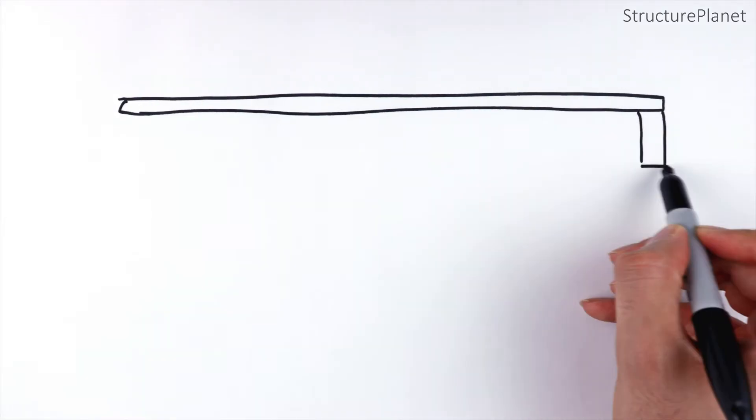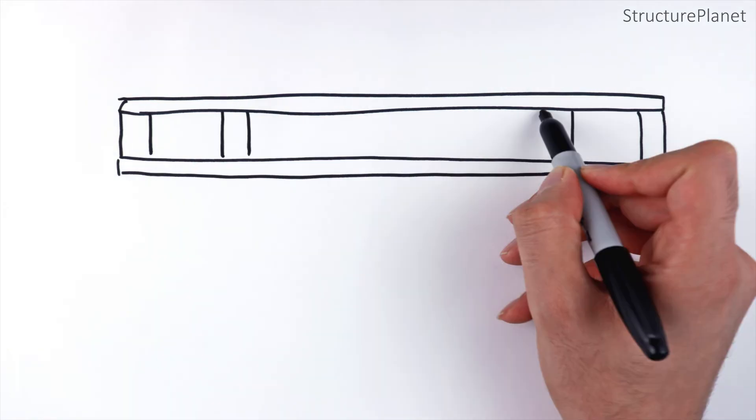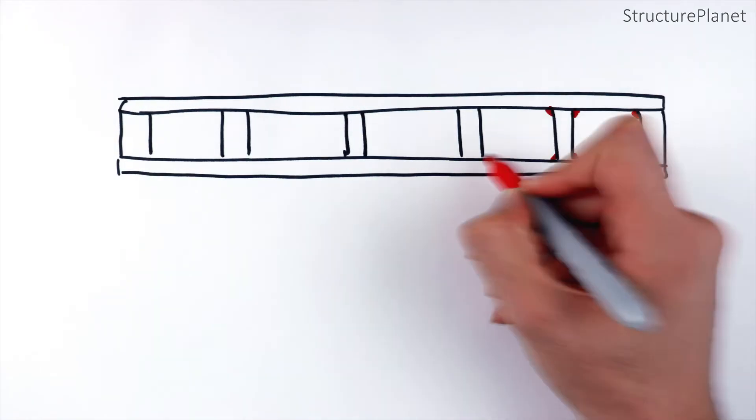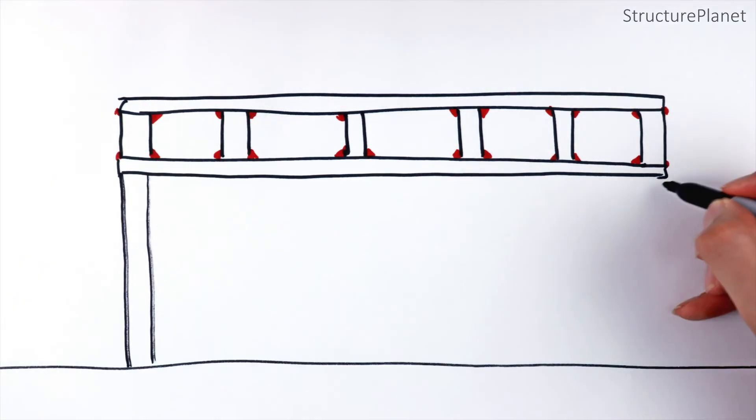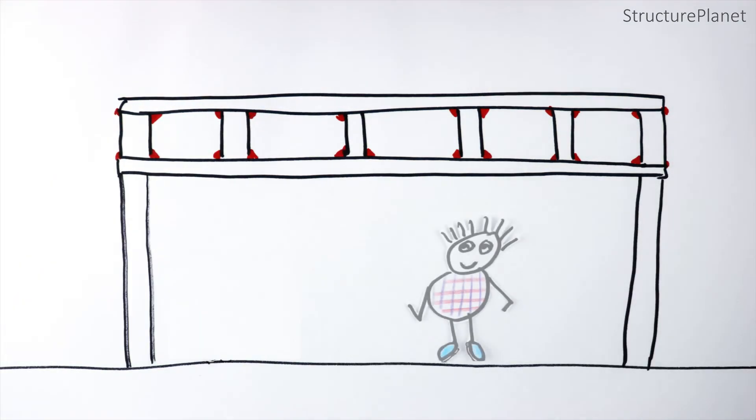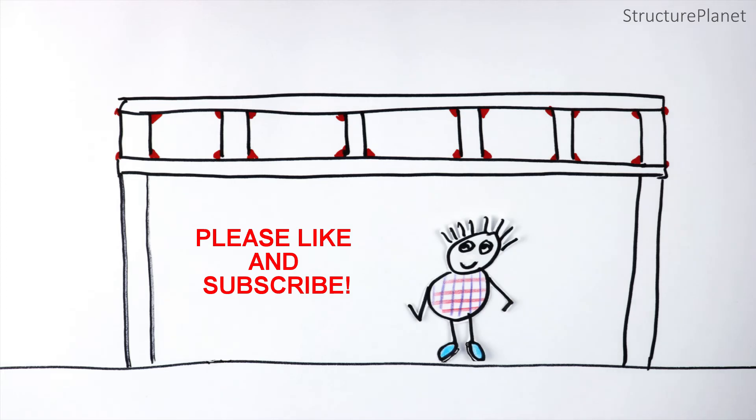It is worth mentioning that there is one special type of truss called Vierendeel, which uses moment-resisting joints without any diagonal members. These trusses do not need to have the triangular form since they have joints with moment capacity that provide stability.